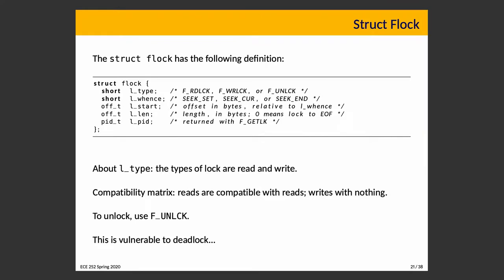The flock structure has the following fields: type, whence, start, len, and pid. The type field specifies whether we want a read lock, a write lock, or to unlock. Read locks are compatible with other read locks; write locks are not compatible with anything else. Whence is a relative point in the file — your choices are basically the beginning of the file, the end of the file, or the current position of the file pointer.